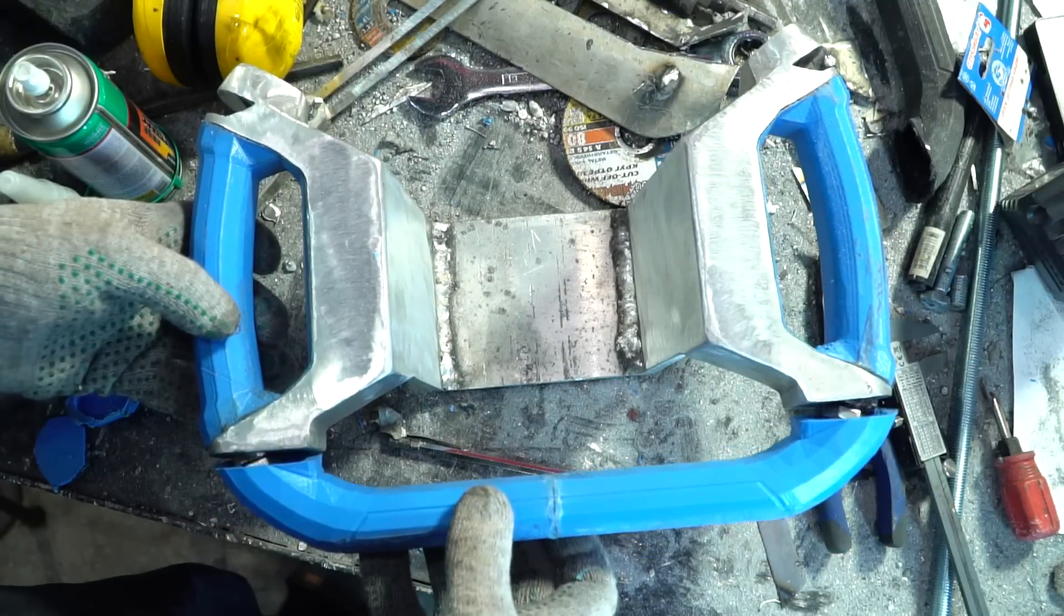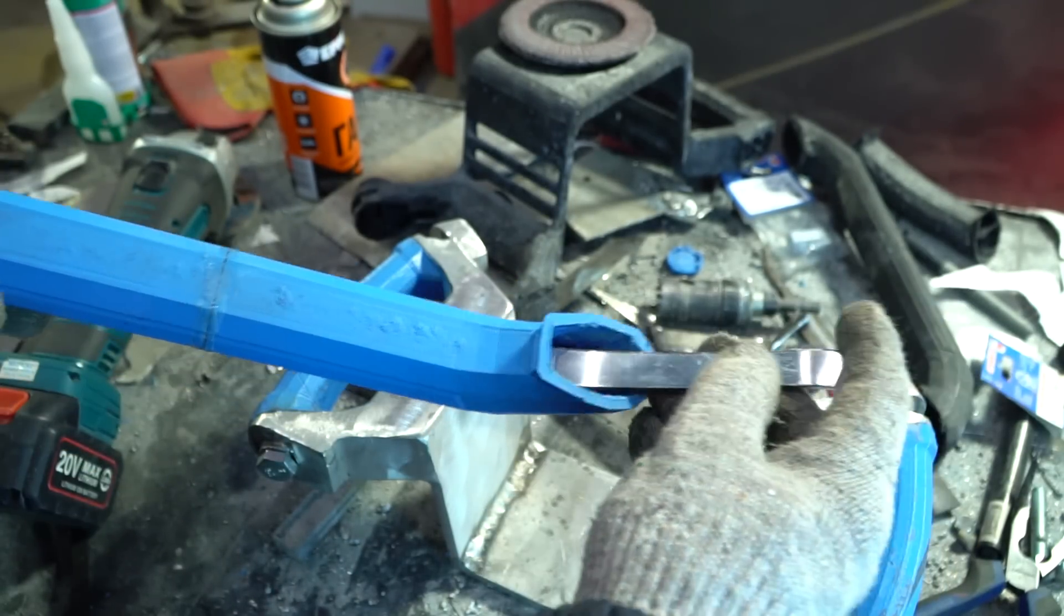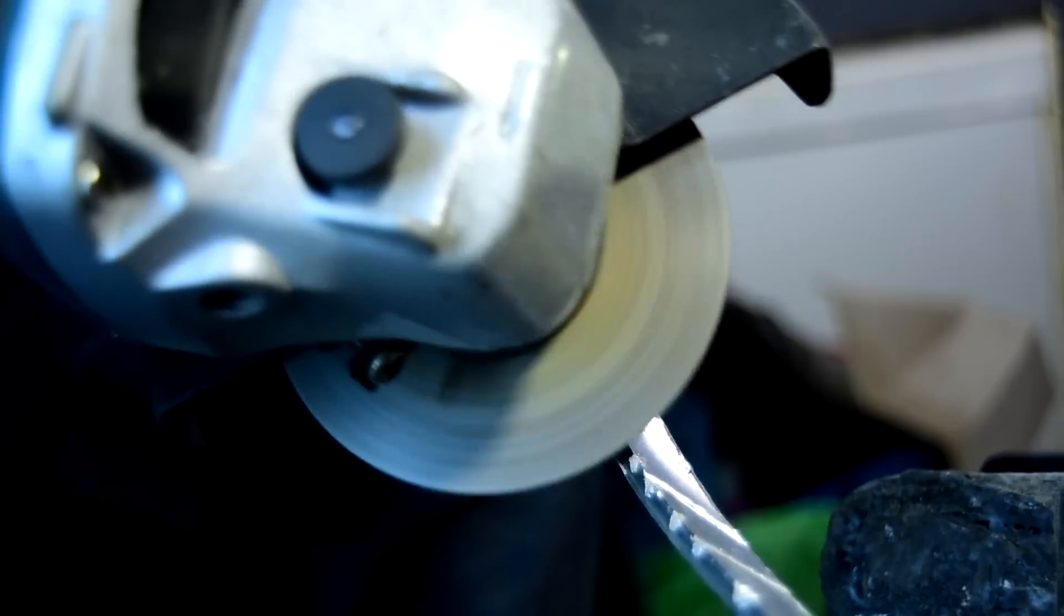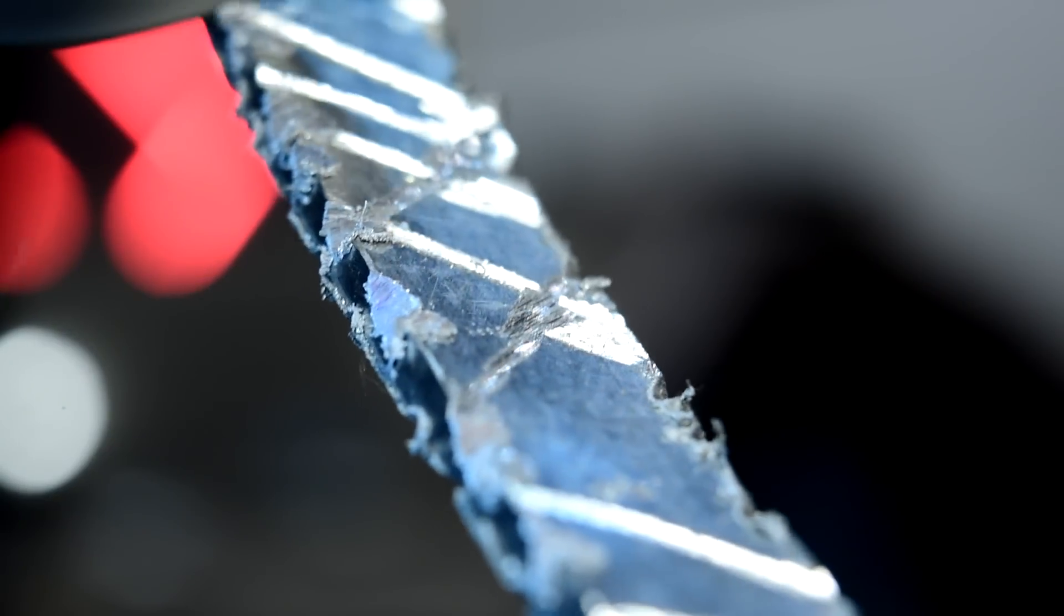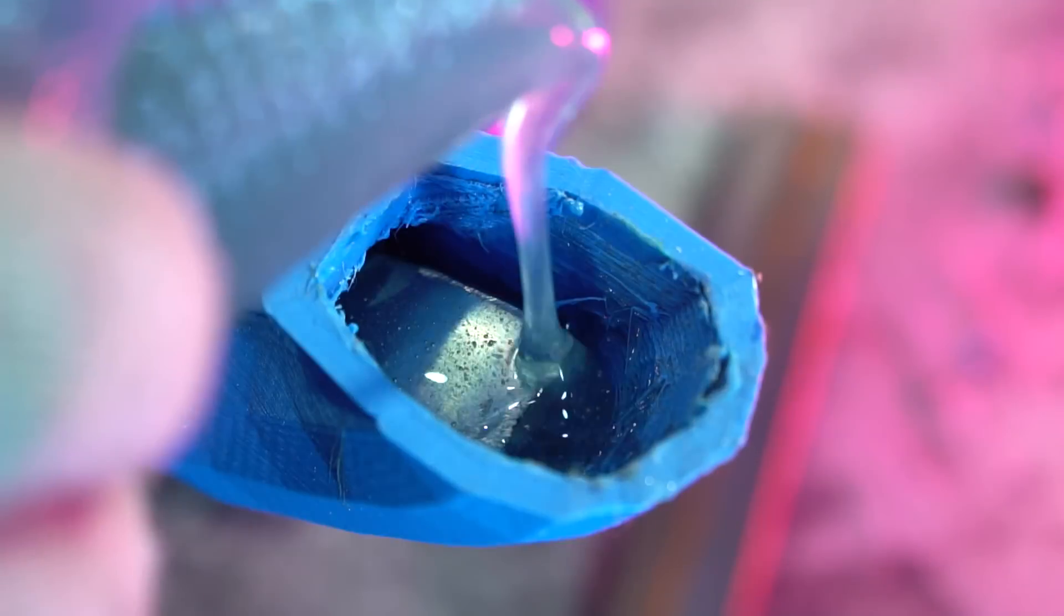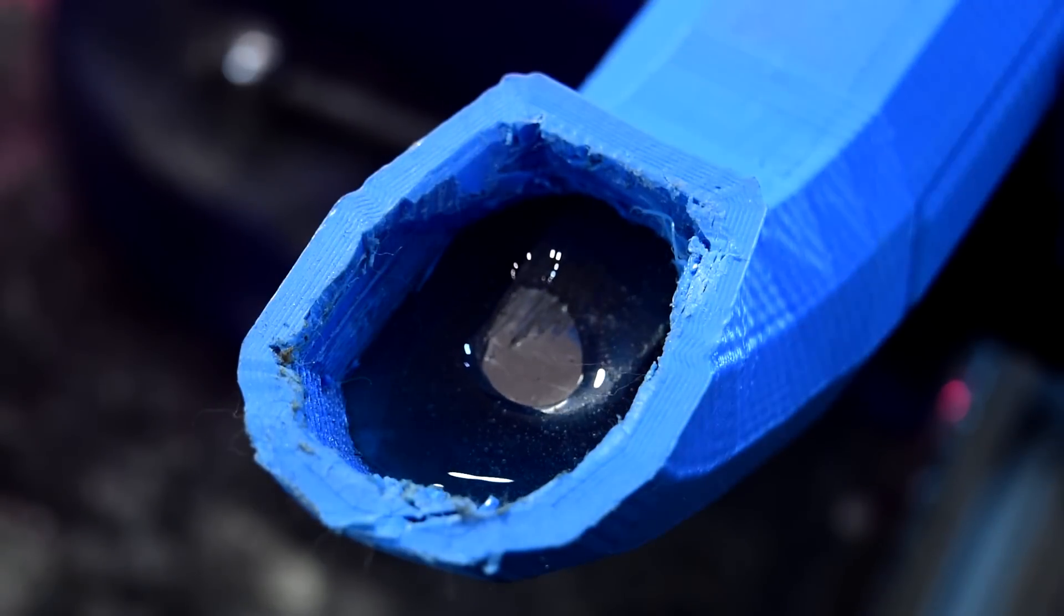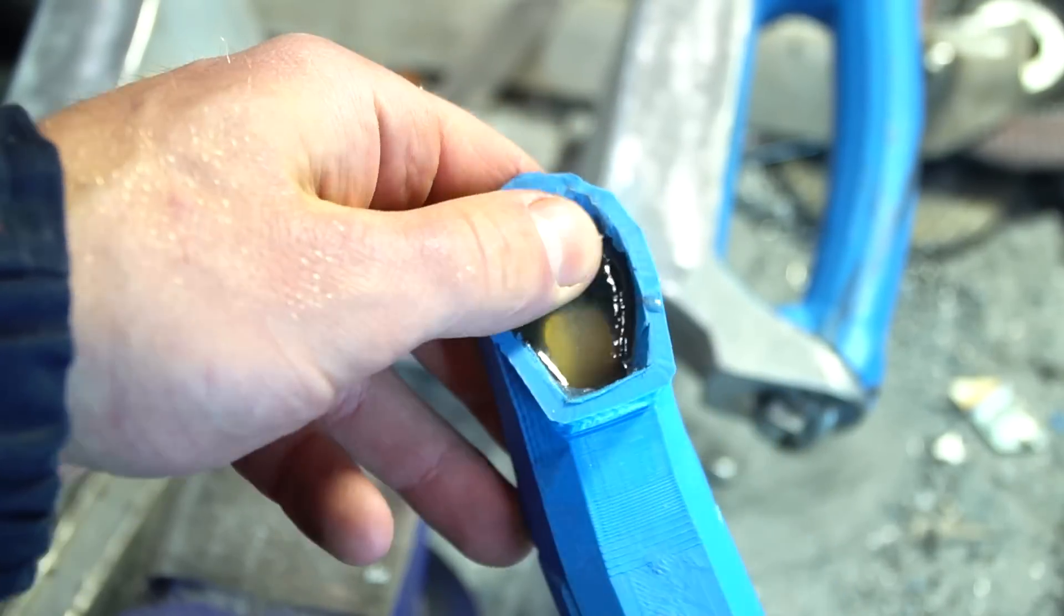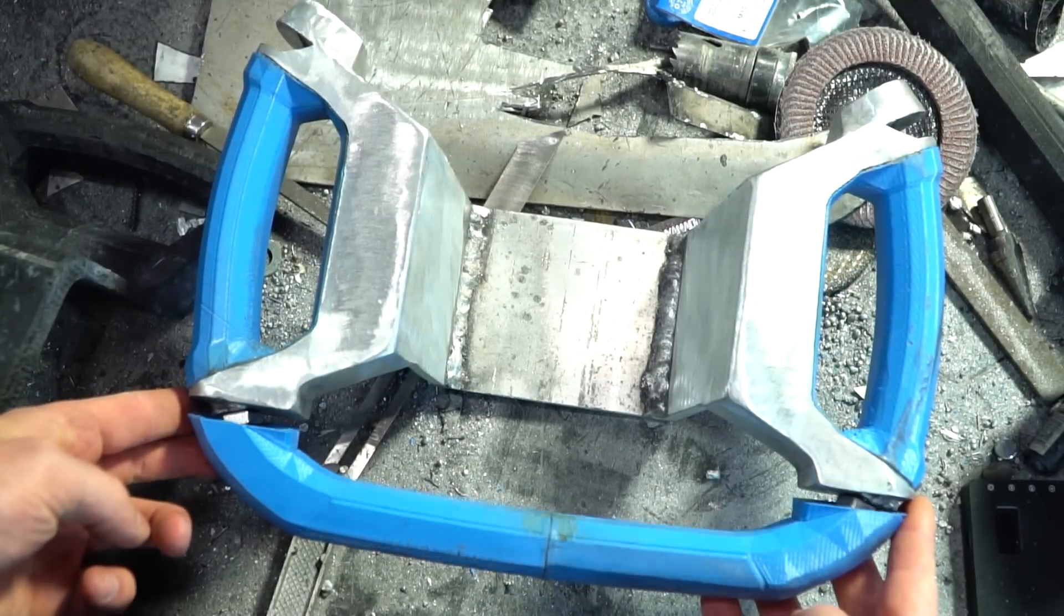This detail will also be filled with resin and reinforced with aluminum strip. In order this strip looked like reinforcement, I made some notches on it.